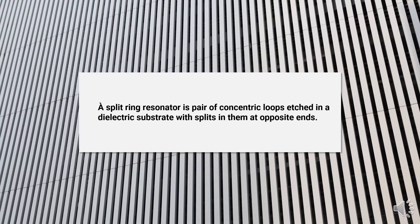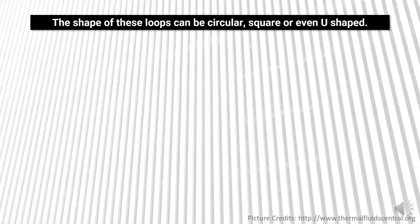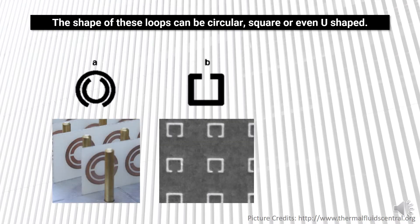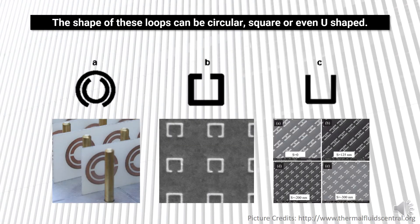Now let's see how they look when they're manufactured. The shape of these loops can be circular, square, or even U-shaped. These loops are made of non-magnetic materials like copper with a gap in between them.